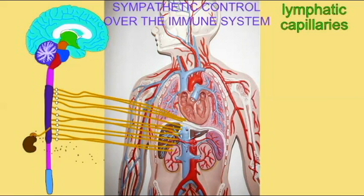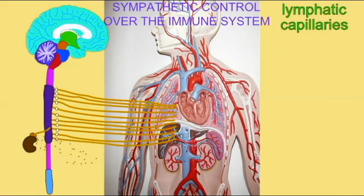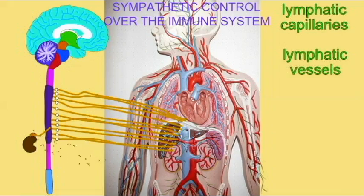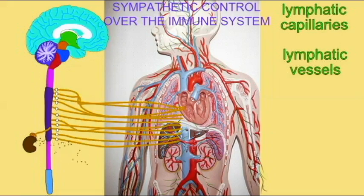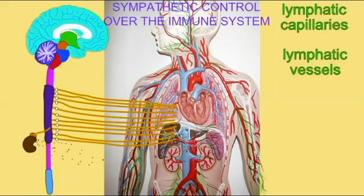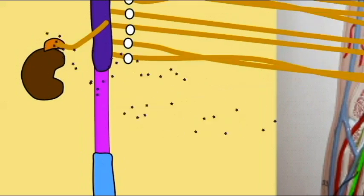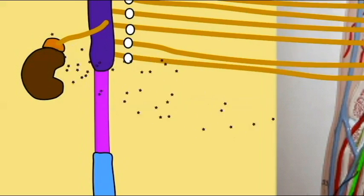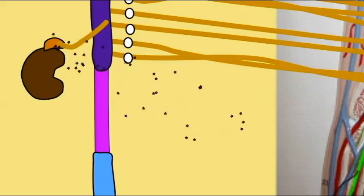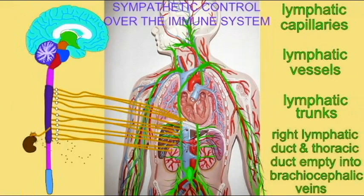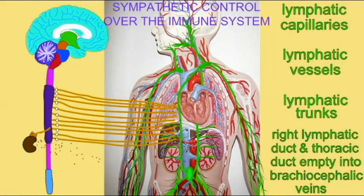The sympathetic division of the ANS seems to have a role in controlling and coordinating immune responses. Epinephrine released into the blood during the fight-or-flight response can affect immune cells, but the sympathetic division also directly innervates all lymphoid tissues.